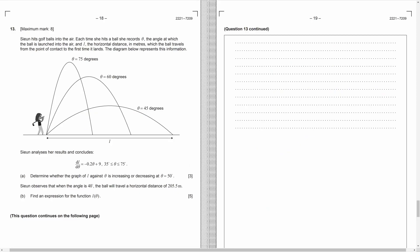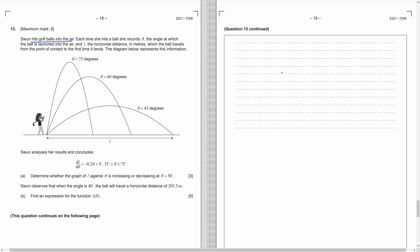Question 13. A ball is launched into the air. Theta is the starting angle and L is the horizontal distance. Some pictures are shown to illustrate the idea. Here, a formula of the derivative of L is given. For part A, for the graph of L against theta, we need to determine it is increasing or decreasing when theta is 50. The graph is increasing means the derivative is positive. And decreasing means the derivative is negative. So, we just need to substitute 50 for theta in the formula above. Finally, we get negative 1. So, the graph is decreasing.